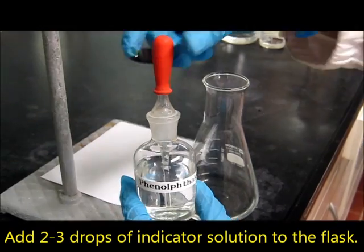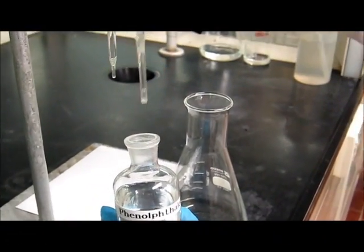So first of all, add 2-3 drops of indicator solution to the conical flask that you have prepared.